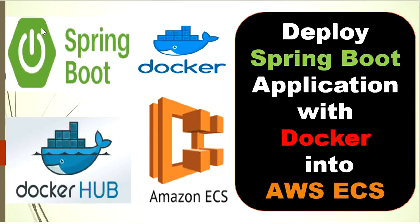So what we will do: first we will create one Spring Boot application, then we will create the Docker image for this application, and after creating the Docker image we will push this Docker image into Docker Hub. Then we will run it in Amazon ECS, and Amazon ECS will use AWS Fargate internally.